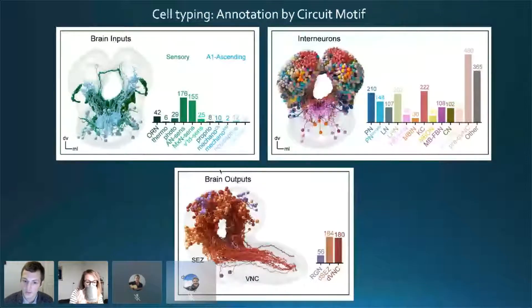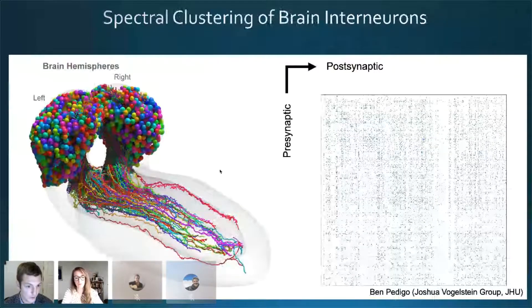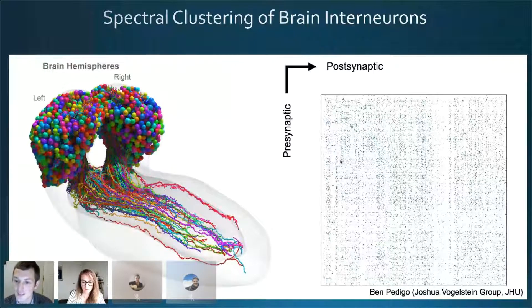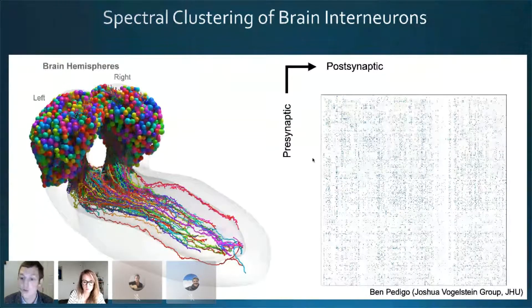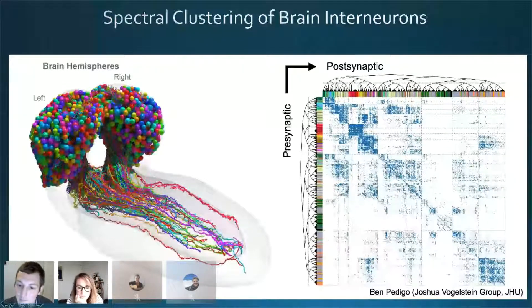To do this, we collaborated with Joshua Vogelstein and Carey Priebe's groups at Johns Hopkins. I'm presenting Ben Pedigo's work here. On the left you see the morphology of the brain, and on the right is the first glimpse of the connectivity matrix of the brain. Every point in this matrix is a specific synaptic connection between one presynaptic and one postsynaptic neuron. In its raw form it looks unstructured, but when we performed hierarchical spectral clustering, we were able to pull out a lot of structure from this connectome. Each leaf in these dendrograms on the edges is a particular cluster we've made, and these clusters matched our cell type annotations quite well.